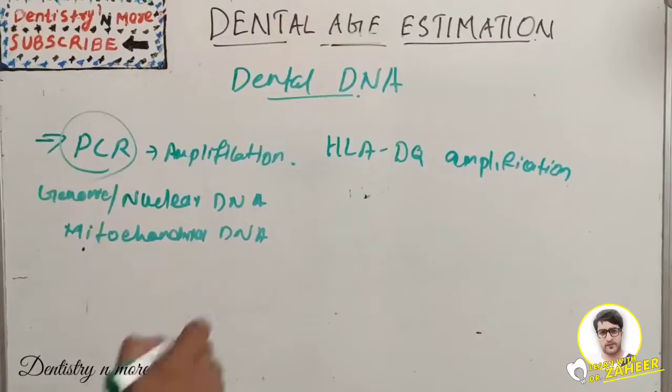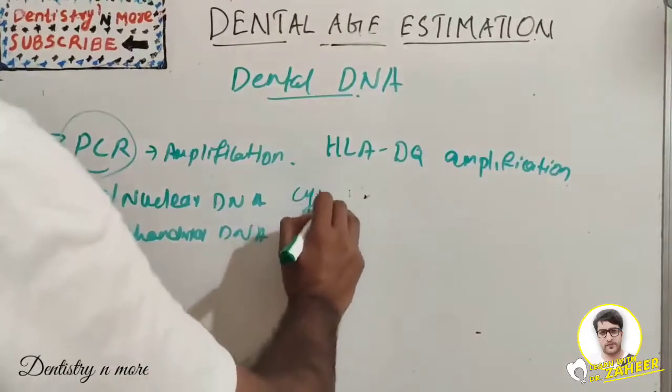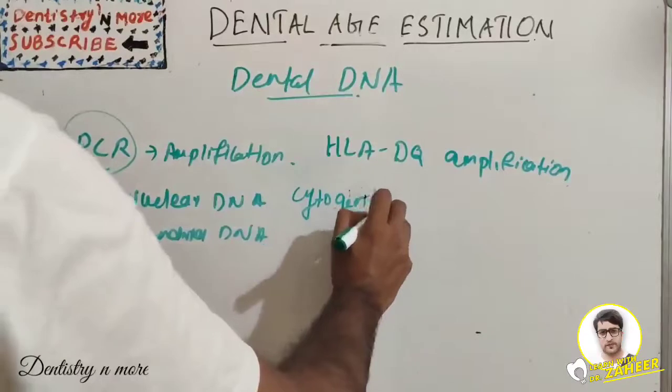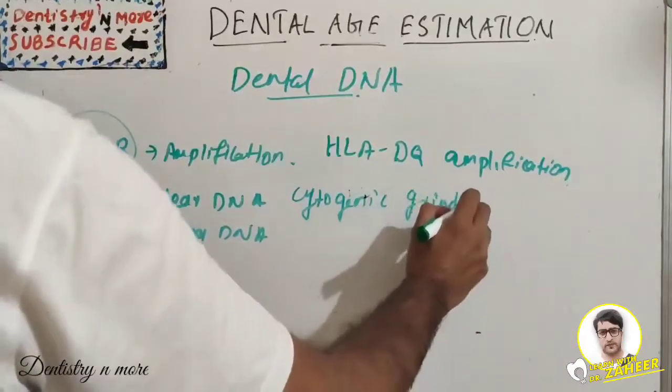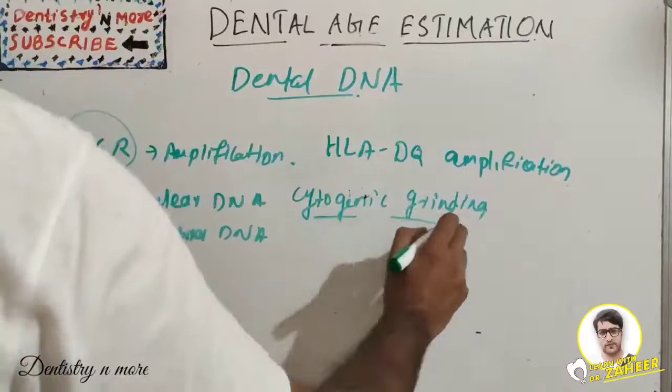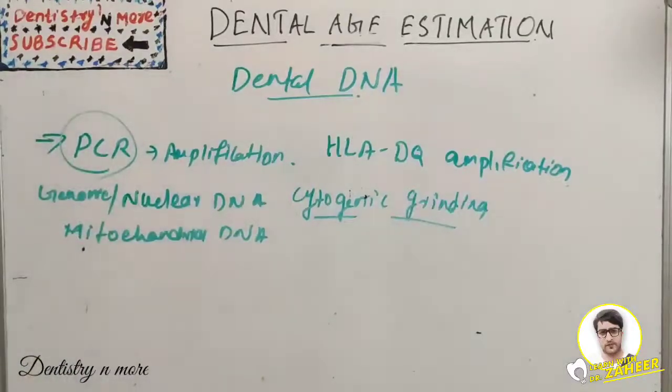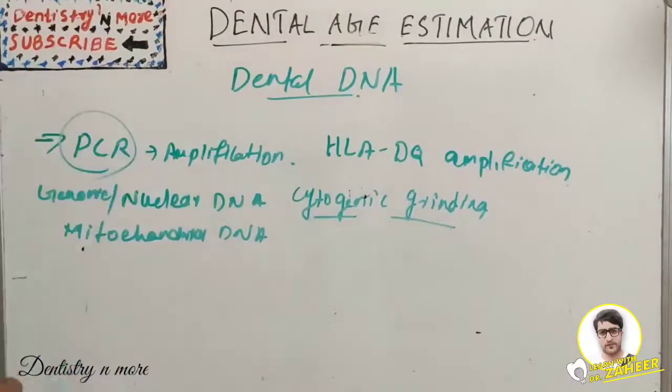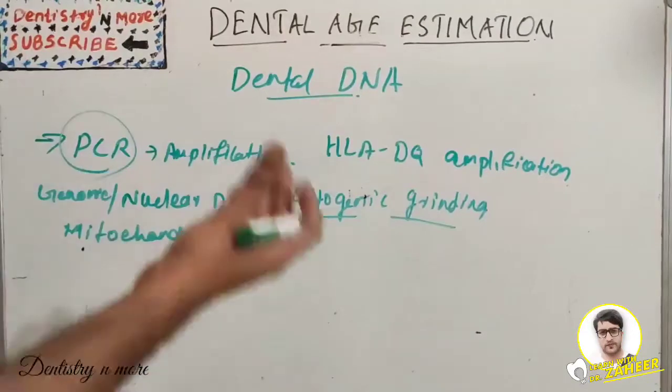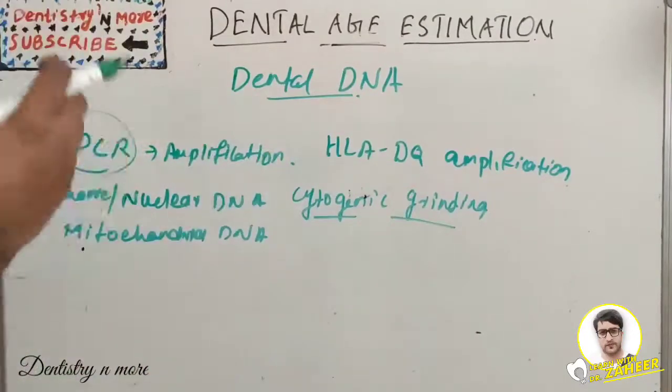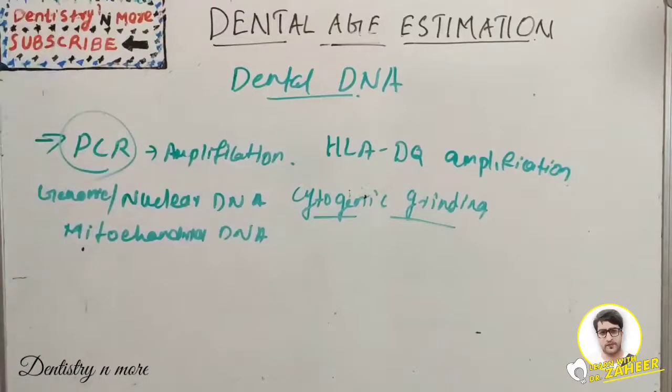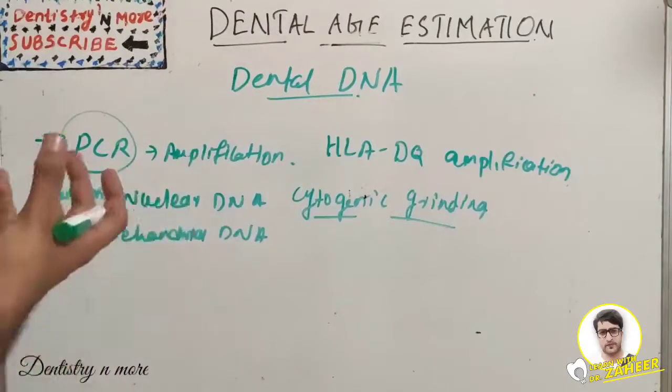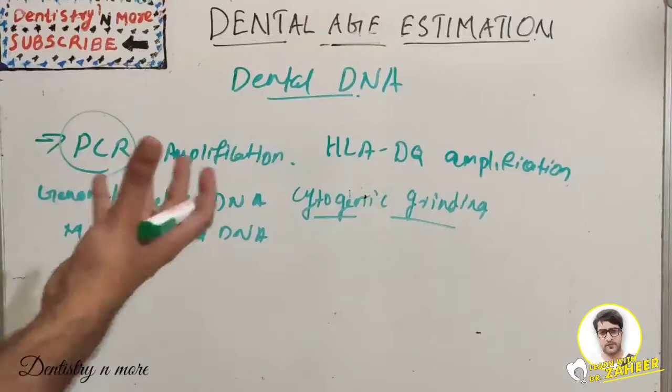Next we have cryogenic grinding. The technique is cooling the whole tooth to extremely low temperature using liquid nitrogen, then mechanically grinding it to very fine powder. Then we get sufficient amount of DNA.